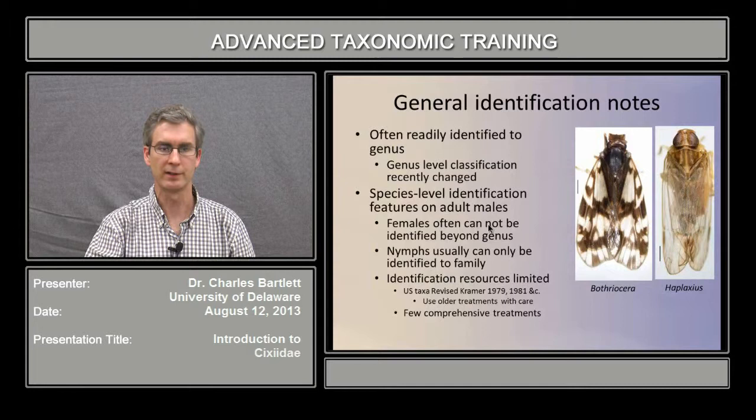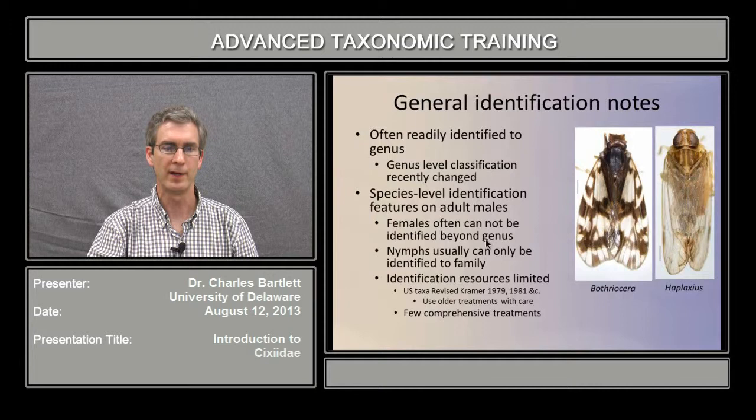6-seeds can be readily identified to genus, particularly in North America, but species require examination of male genitalia. Females often cannot be identified beyond genus, and nymphs usually can only be identified to family.